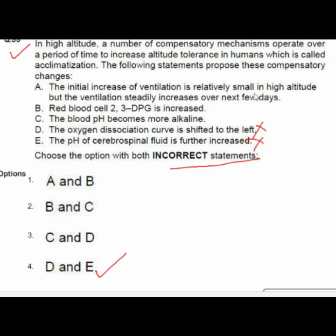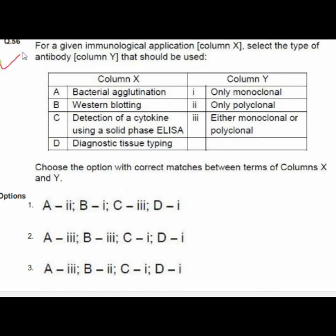Question 56 is a match-the-following: for a given immunological application in column X, select the type of antibody from column Y. Option 2 is correct: A — bacterial agglutination matches with third; B — Western blotting matches with third (either monoclonal or polyclonal); C matches with first (only monoclonal); D matches with second (only polyclonal).